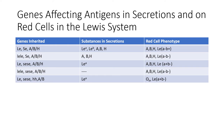If someone inherits a capital LE and lowercase SE with ABH, they would have Lewis A antigens in secretions but no ABH. They would have ABH and Lewis A antigens on the red blood cells. If the person is homozygous for lowercase le and lowercase se, they would have no antigens in secretions. They would have A, B and H antigens on their red blood cells, but no Lewis antigens.